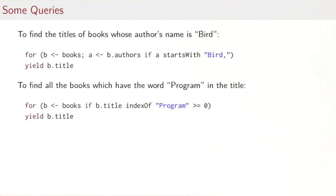To find all books which have the word 'program' in the title, one way we could write that is we let b range over the books and we ask whether b.title has the word 'program' in it. A way to achieve that would be to use Java's indexOf function, which produces the index of the substring if it appears and minus one if it doesn't. For all the books where this condition is true, we yield the title.